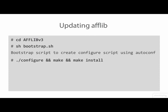Create the configuration bootstrap script and perform the actual build and installation of AFFLib. The compiled AFF tools will be placed in the user local bin subdirectory. Finally, run the hash command to update the bash shell's file cache and run the AFFinfo command again to check that we are now using the latest release of AFFLib.